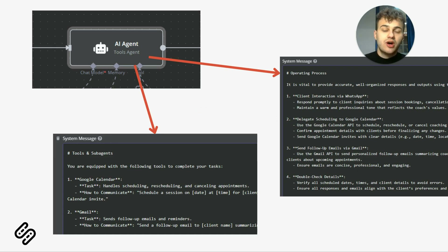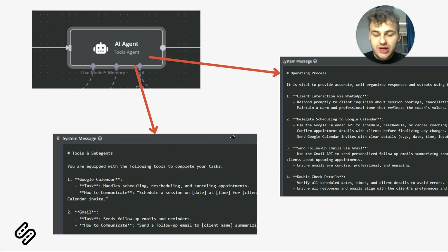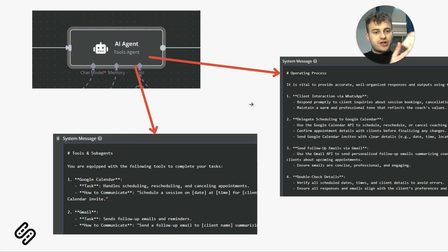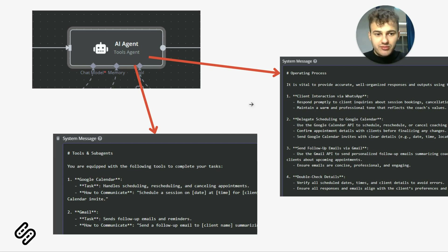In the prompt, you also describe the operating process and what tools the AI agent possesses — for example, Google Calendar. You describe when to use it, in which cases, and how. The same applies to Gmail. This process is similar to employee onboarding: you give the person instructions, give them data, and give them tools with instructions on how to use them — very similar to the AI system we are talking about.